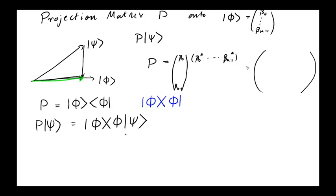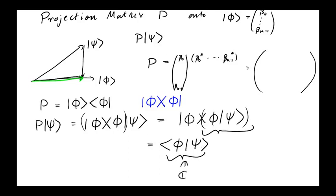And now we can use associativity of these multiplication operations and we can write this with parentheses like this. So before we had this times φ and now we can write it as this times that. And what's this quantity? Well this is just the inner product, so this is just the inner product between φ and ψ which belongs to the complex numbers.